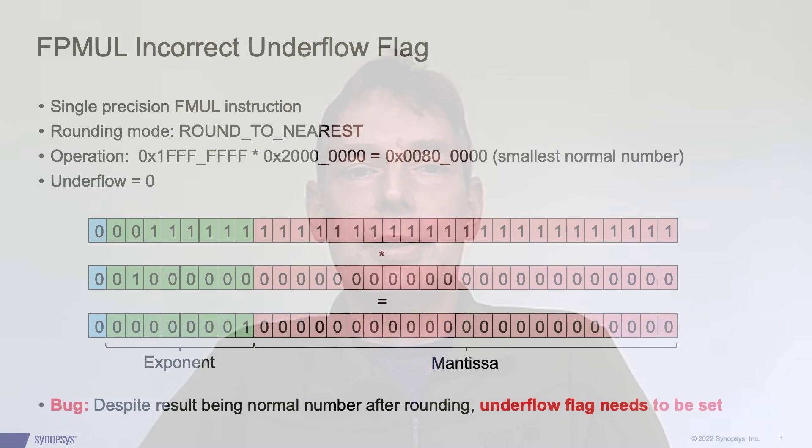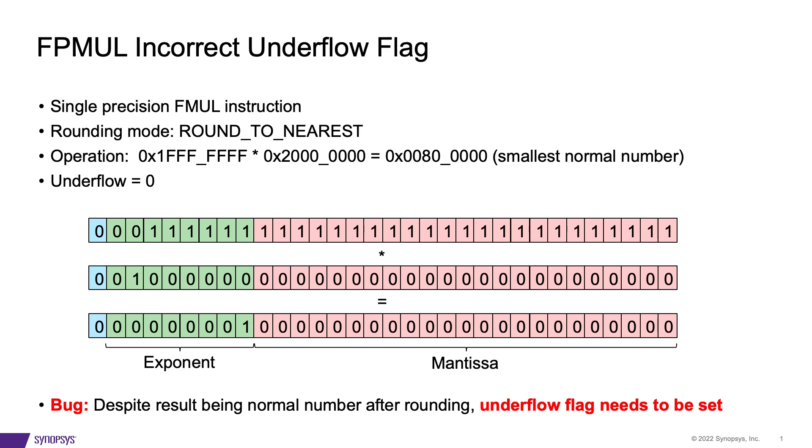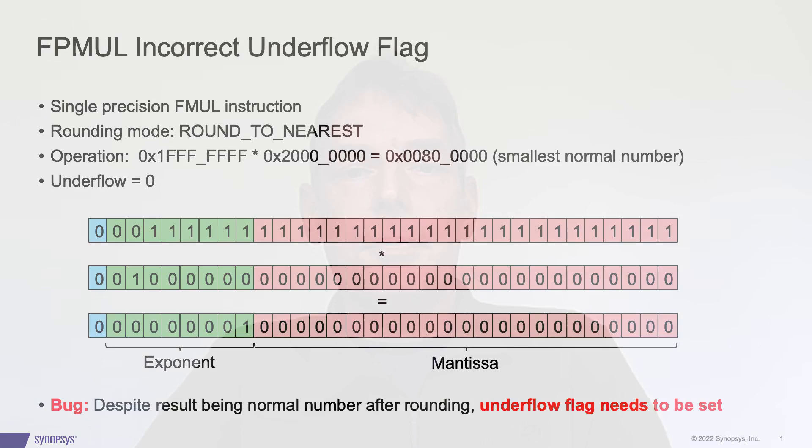Can you share with us some of the design bugs that VCformal DPV has found? We found a lot of bugs in floating-point units — for example, floating-point multiplication, floating-point division, multiply and add. Those were mostly corner case bugs that didn't get detected in simulation, like incorrect results in flags or incorrect results in the least significant digits of normal numbers. One very experienced FPU designer once called Hector a bug vending machine, and he used Hector very early on in the design phase, so he would quickly get one bug after another, which he would then immediately fix.